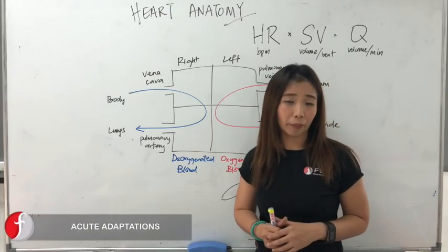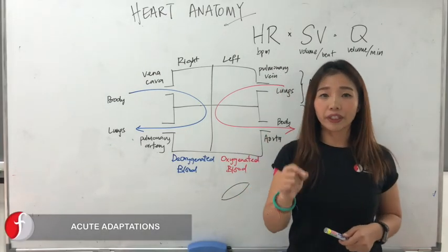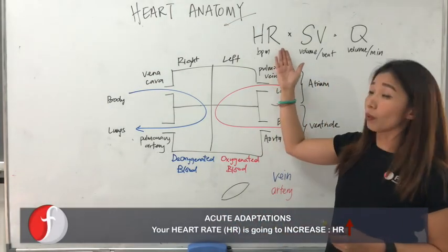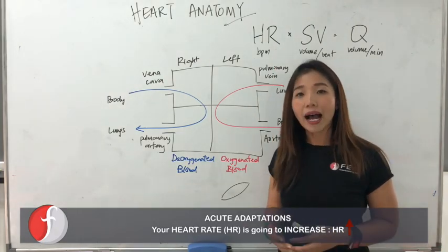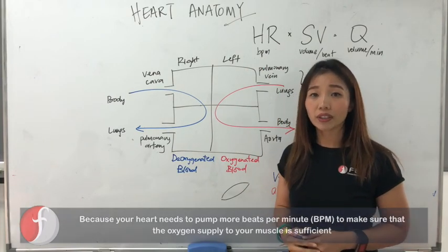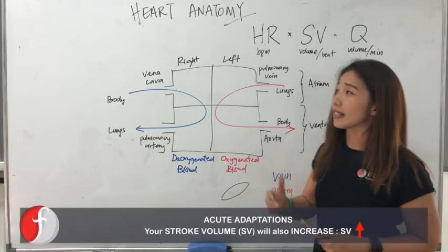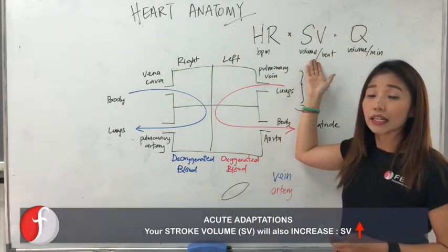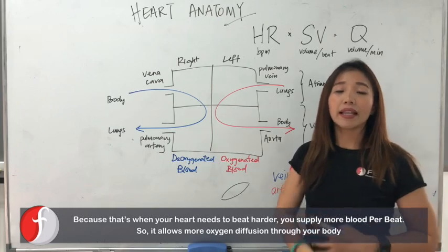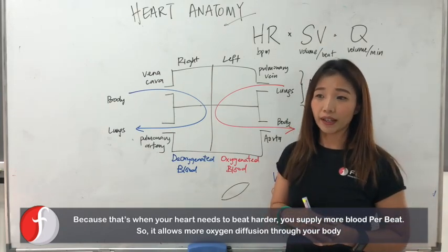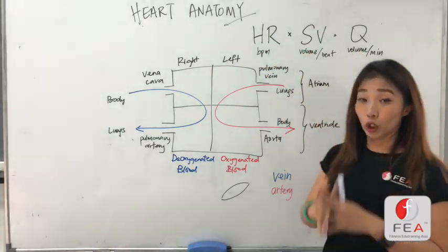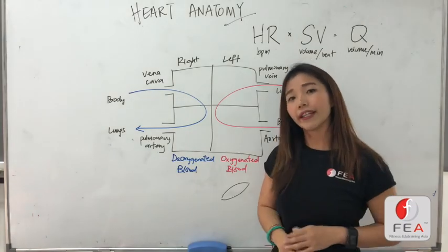Now, let's talk about acute adaptation — meaning, what actually happens in a short period of time when you actually exercise. What you're going to observe is that, number one, your heart rate is going to increase, because your heart needs to pump more beats per minute to make sure that the oxygen supply to your muscles is sufficient. The next thing you will see is that your stroke volume will also increase, because that's when your heart needs to work harder to actually supply more blood per beat, so that it allows more oxygen and nutrition through your body. And finally, if heart rate increases followed by stroke volume increasing, you will observe that the total volume of blood that has been pumped in one minute is going to increase.